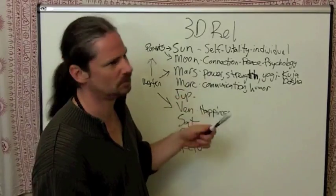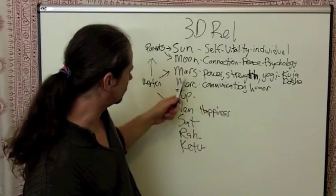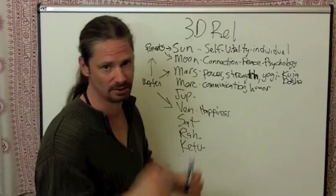But, I mean, Mars-Moon, any of the nodes, Mars-Mercury, Mars is disruptive and individual in general.